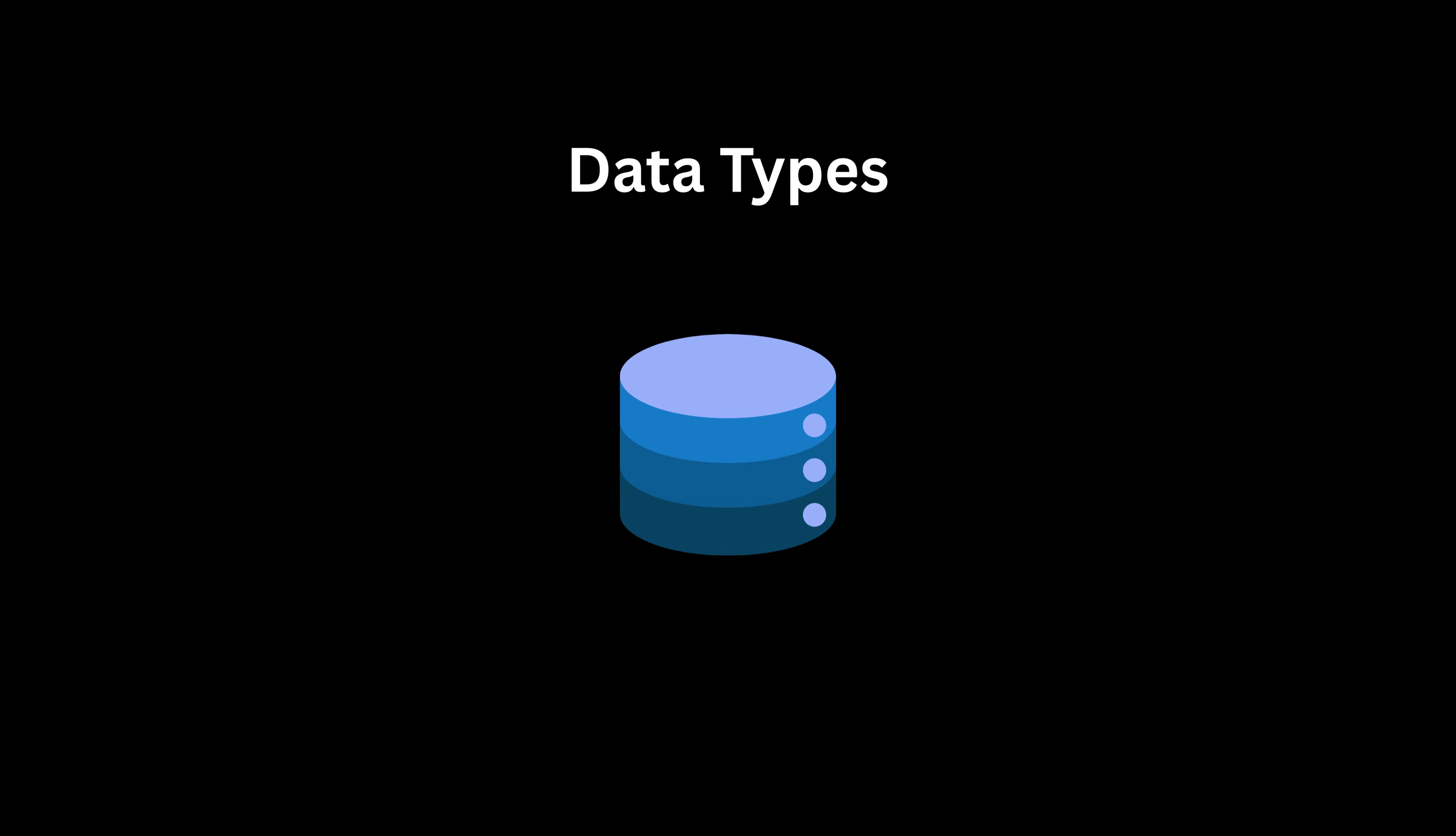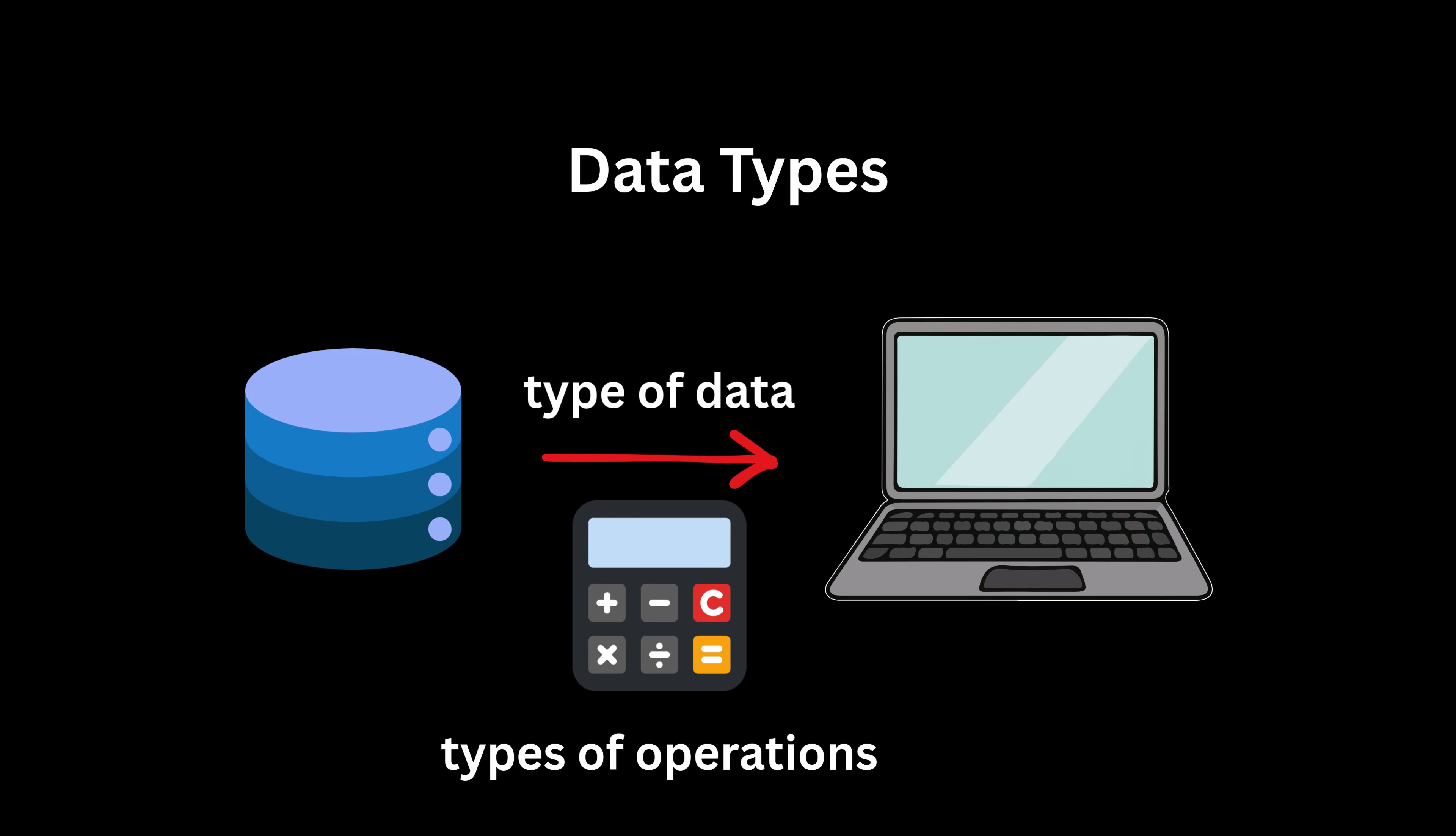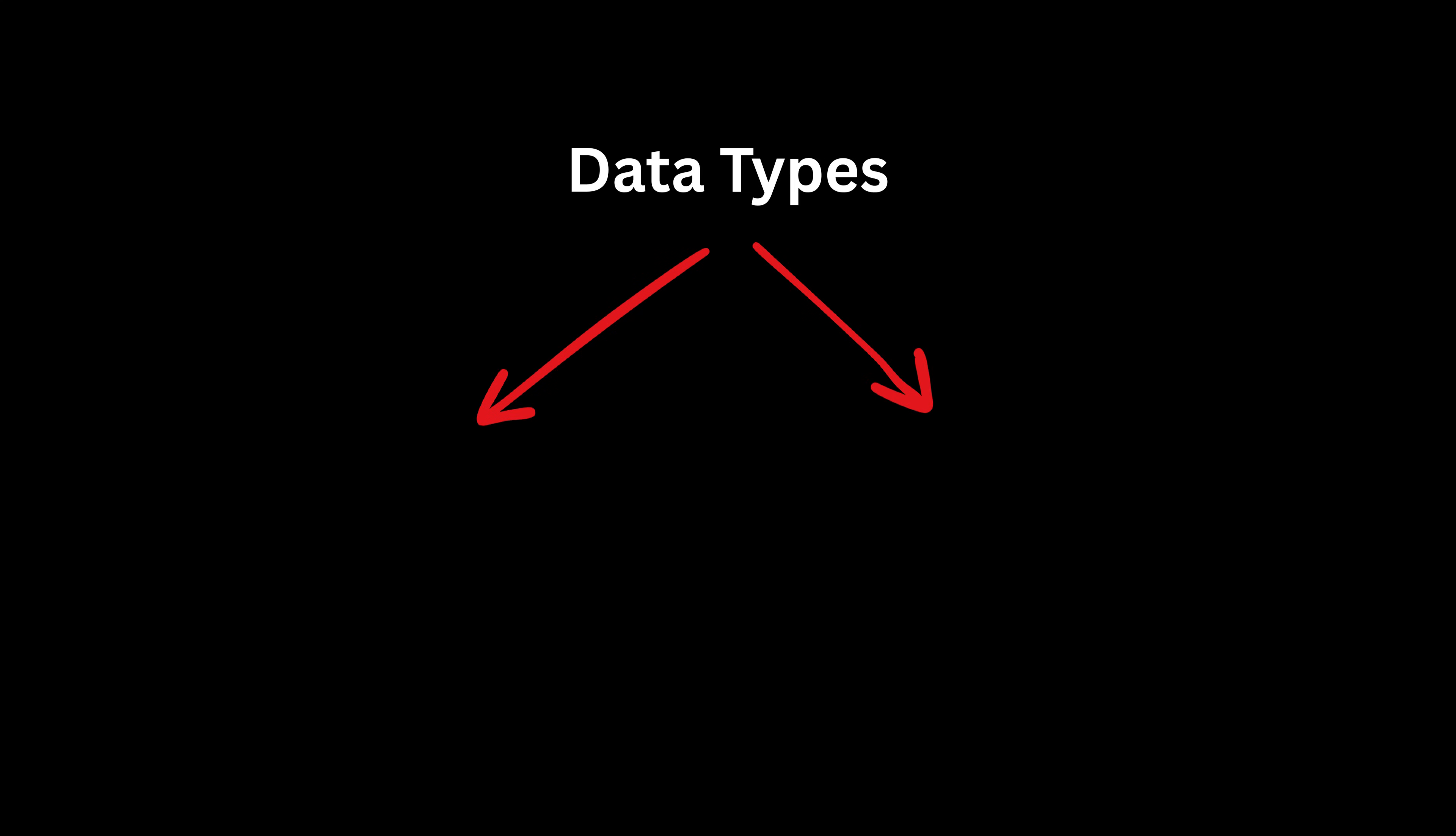A data type is the most basic idea in programming. It tells the computer what kind of data we are storing and what low-level operations are allowed on that data. There are two types of data, namely primitive data types and user-defined data types.